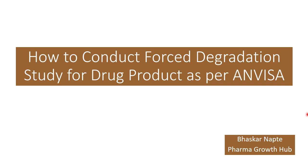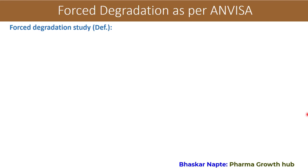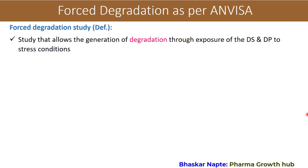You will not find details about how to conduct forced degradation in the ICH guideline Q2(R2), though it is under draft and the details are not well explained for method validation. The definition of forced degradation, according to ANVISA, is a study that allows the generation of degradation through exposure of the drug substance and drug product to stress conditions — that is the forced degradation study.